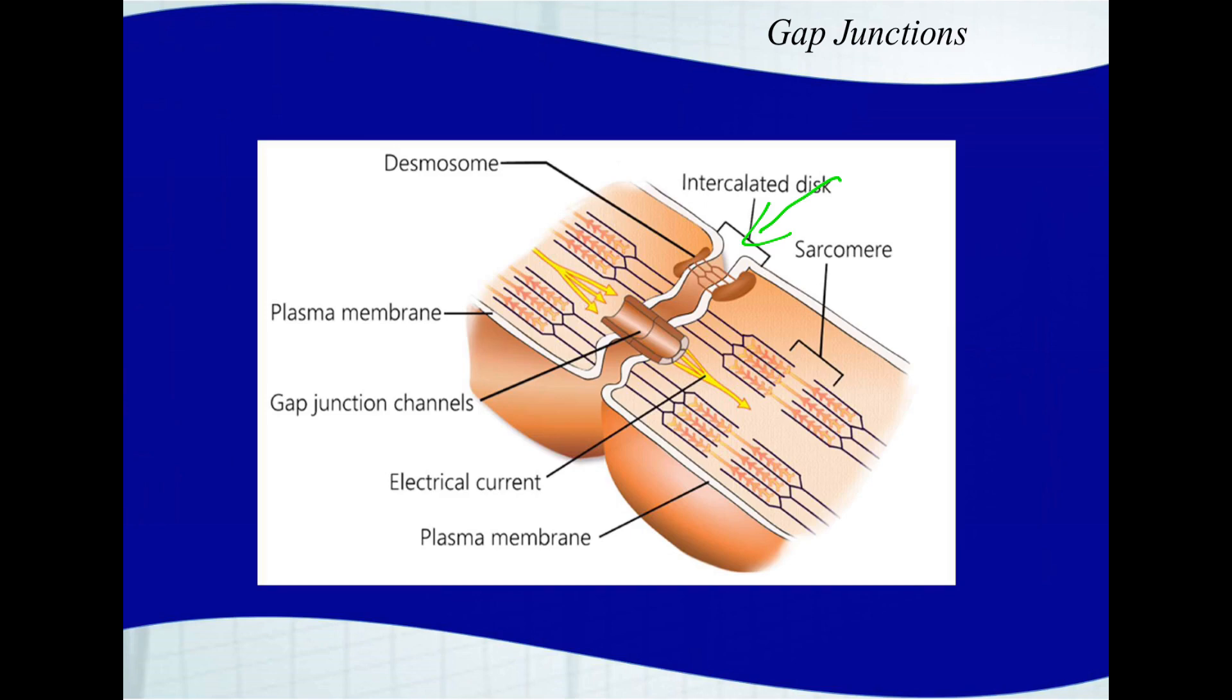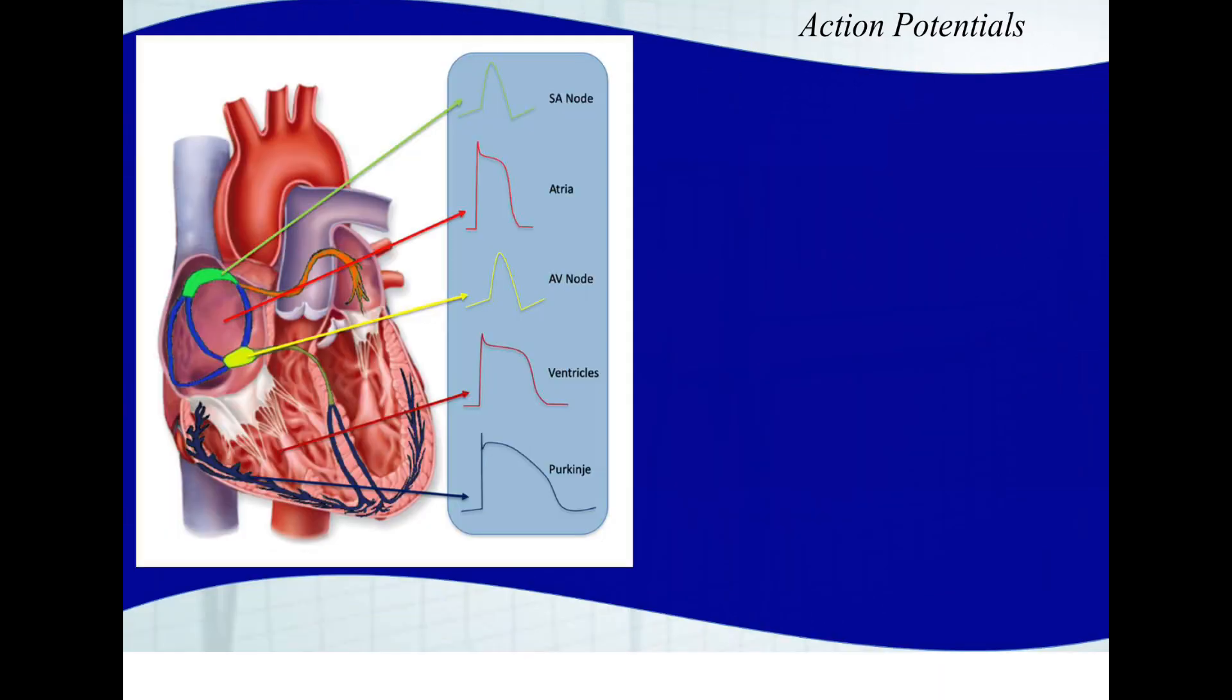Some cells respond faster to ionic changes than others, so the rate or speed of conduction will vary depending on which part of the conduction system is triggered. Now we're going to talk about cardiac action potentials, sometimes referred to as membrane action potentials. This is a topic that confuses a lot of people. In a normal functioning heart, it's the SA node that generates the action potential that will ultimately lead to cardiac contraction.